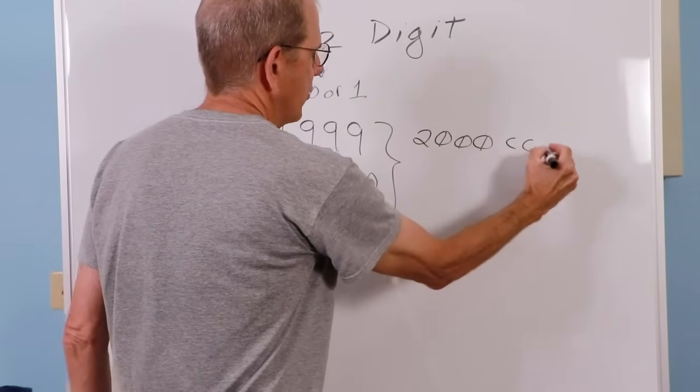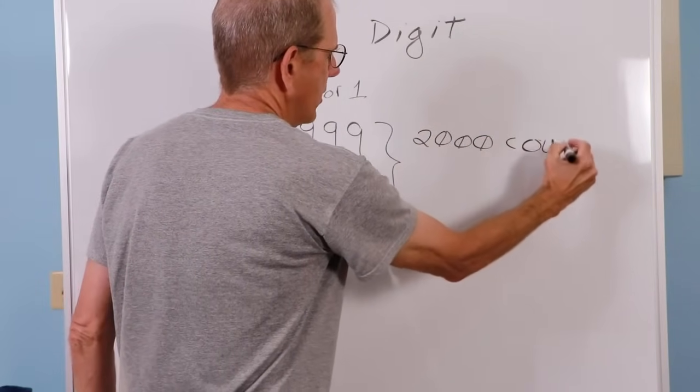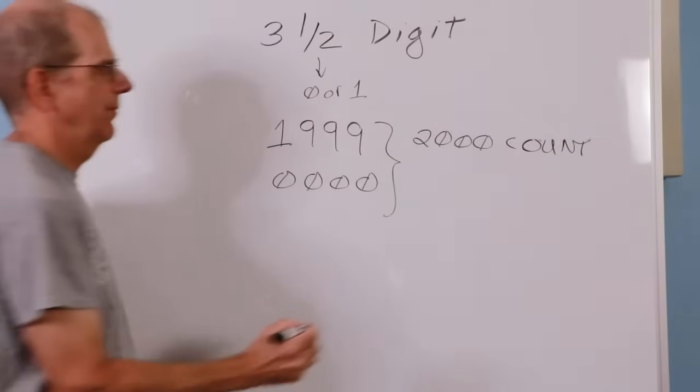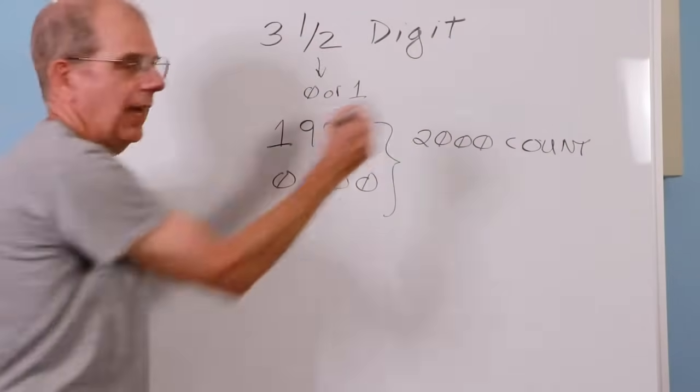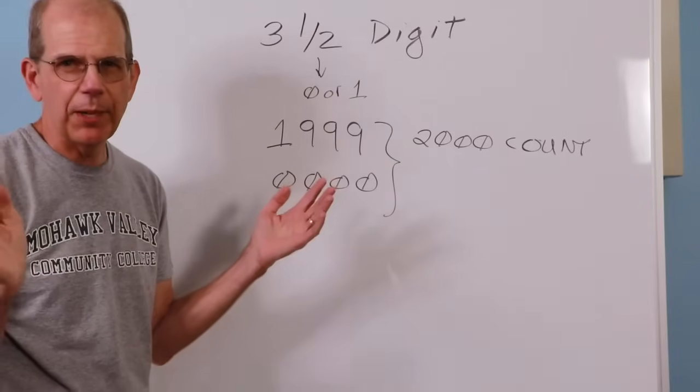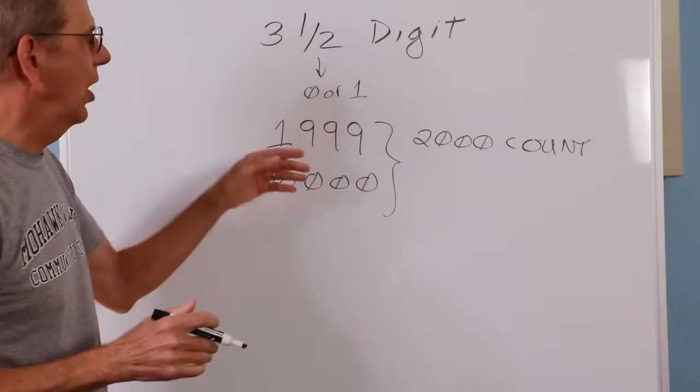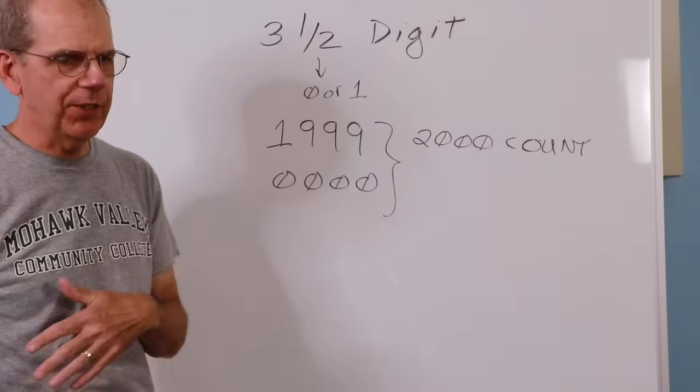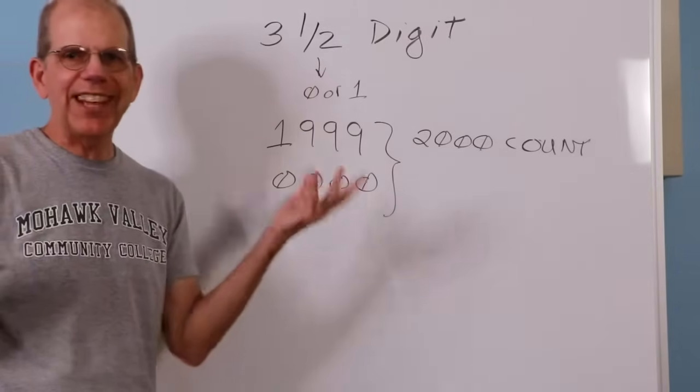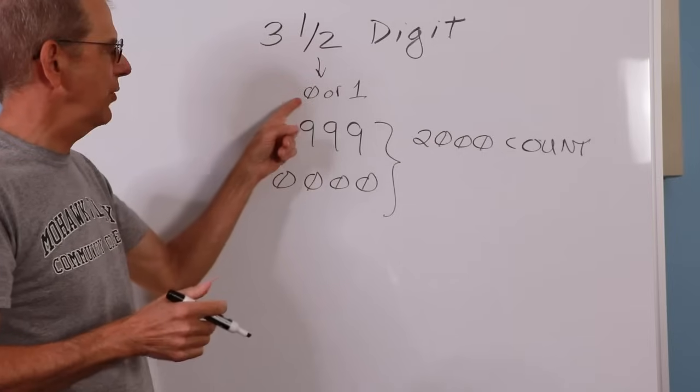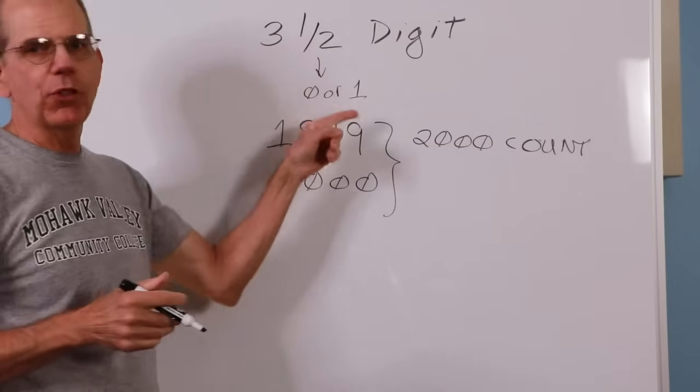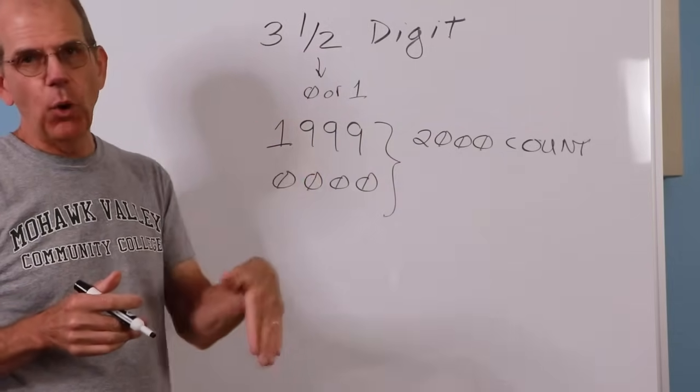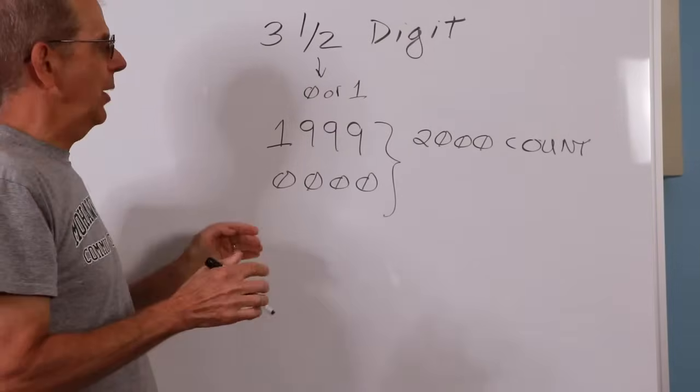So you will sometimes hear this referred to as a 2,000-count meter, 2,000-count, or 3 1/2-digits. Either way, same thing. You will sometimes hear of a 3 1/4-digit. We'll say this is a 3 3/4-digit. Well, a 3 1/4-digit, there's no standard for it, but typically that would mean the first digit can be 0, 1, 2, or 3, sometimes 0, 1, 2, 3, 4.